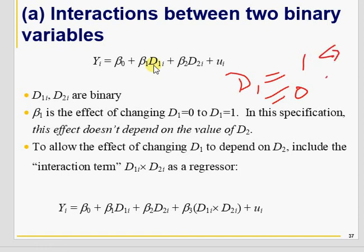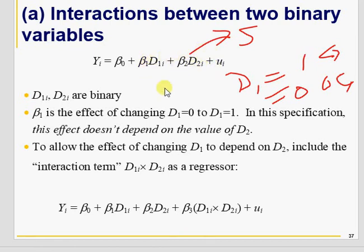D1 is 1 for graduate, 0 for undergrad. D2 is male or female. When we see the effect of D1 — that is the effect of being a graduate on Y — both male and female are excluded from it. And when we see the effect of male and female, the graduate effect is not included. I am interested in: what is the impact of being male and graduate, being female and graduate, being male and non-graduate, being female and non-graduate?